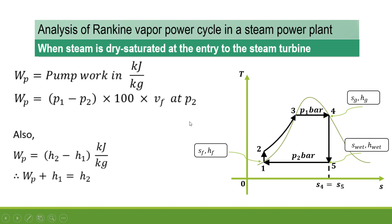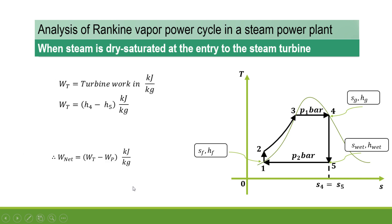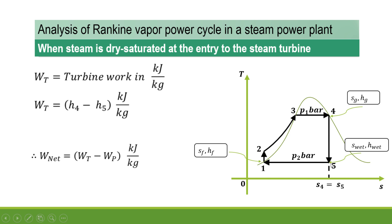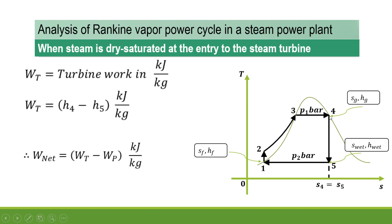Since 1 to 2 is the pump work, we can also express it in terms of enthalpy: Wp = H2 − H1, so H2 = Wp + H1. For process 4 to 5 — isentropic expansion in the steam turbine — the turbine work is given by H4 − H5. Net work equals turbine work minus pump work, since part of the turbine output is used to drive the pump.